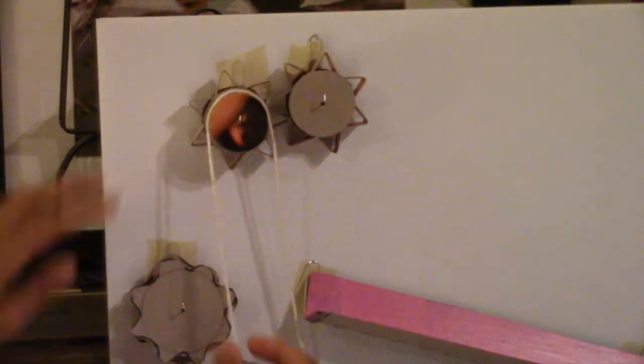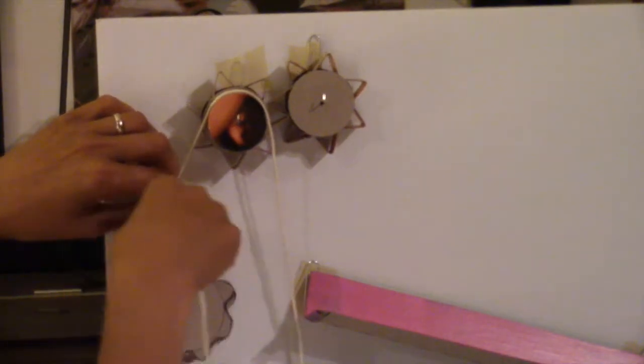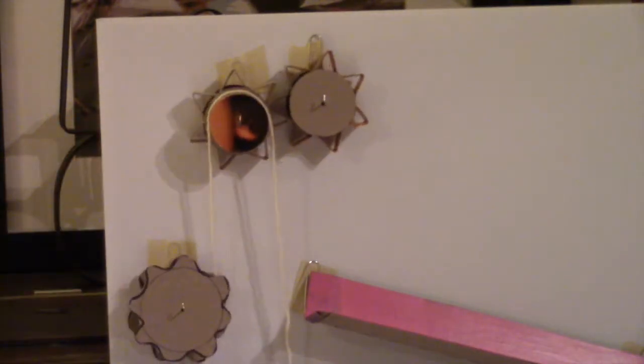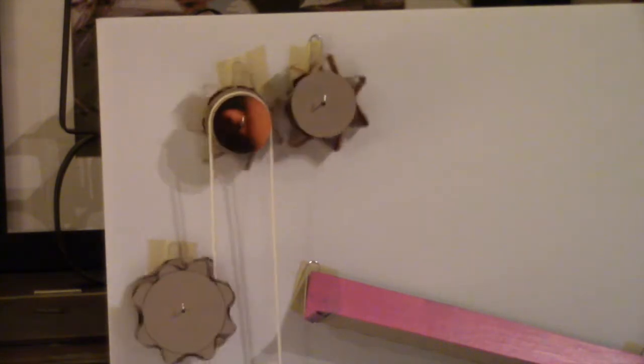Since the string spinners and pulleys don't have teeth, you need to wrap a string around them to make them turn with everything else. I either glued or wrapped rubber bands on all the tubes that the strings will contact to keep them from slipping.